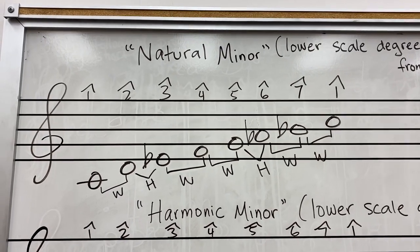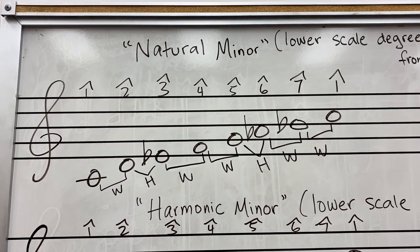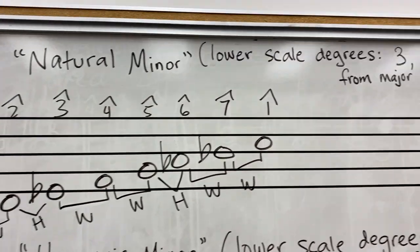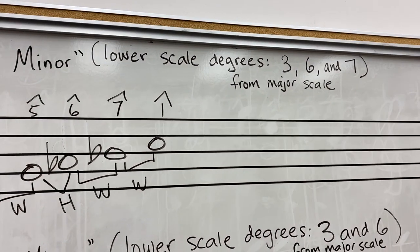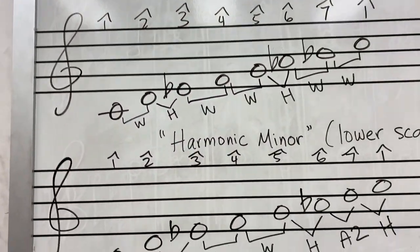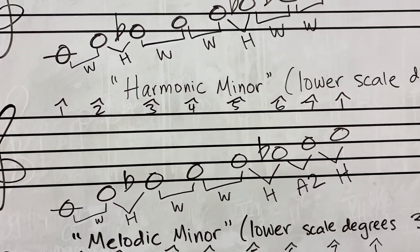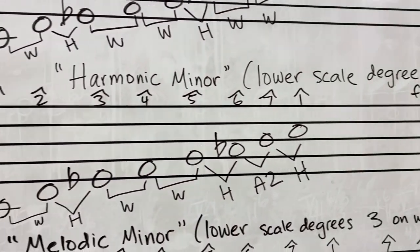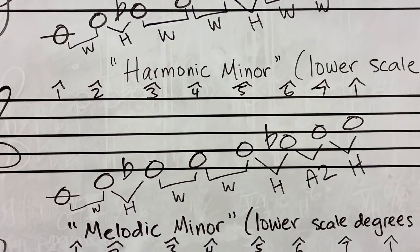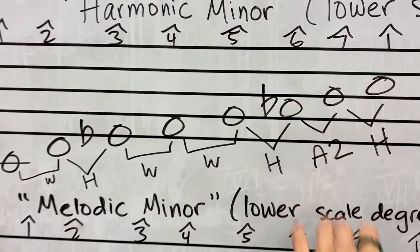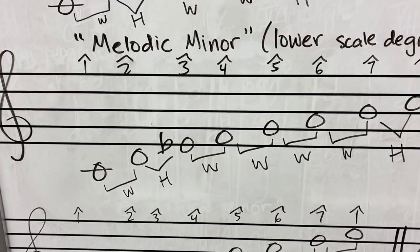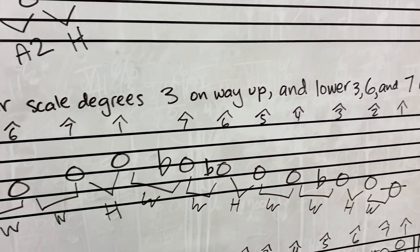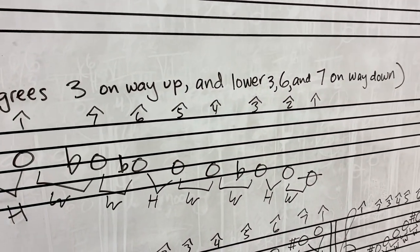In this video, I will be talking about the three types of minor scales. We have natural minor, where we lower scale degrees 3, 6, and 7 from the major key. We have a harmonic minor scale, where we lower the scale degrees 3 and 6 from the major scale — this is also the minor scale that has the augmented second. And then we are going to be talking about the melodic minor scale, where we lower scale degree 3 on the way up, and then we lower 3, 6, and 7 on the way down.